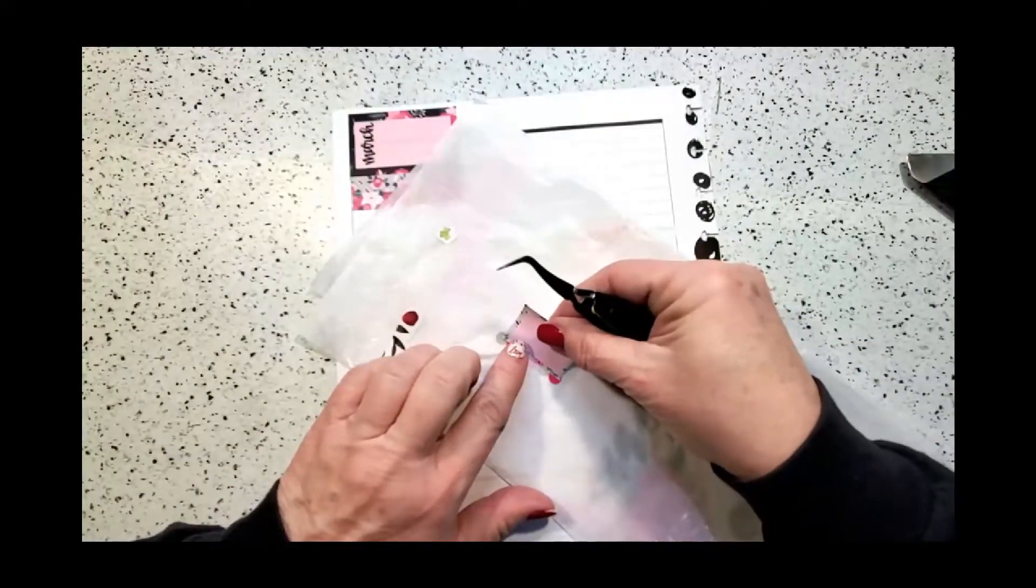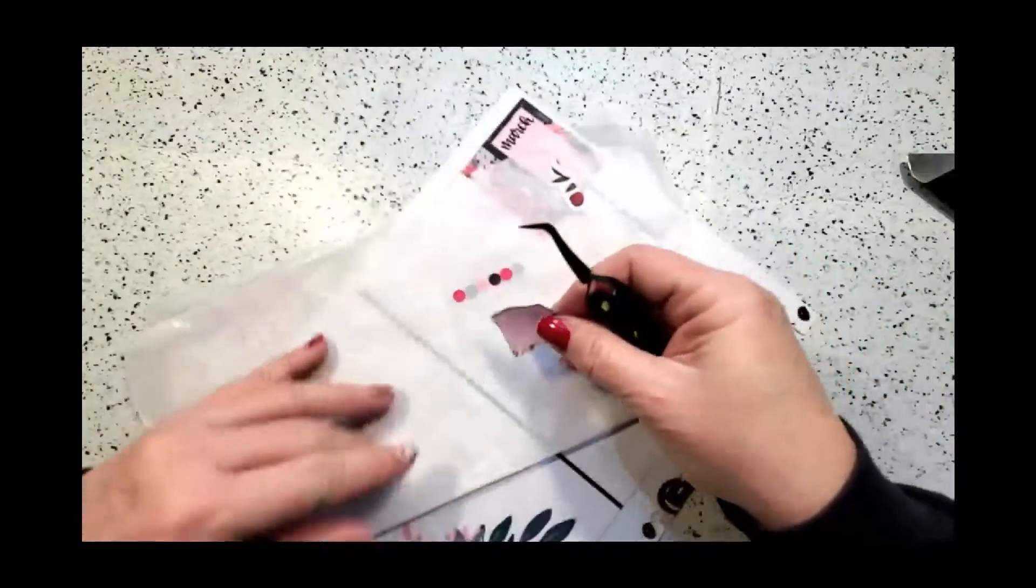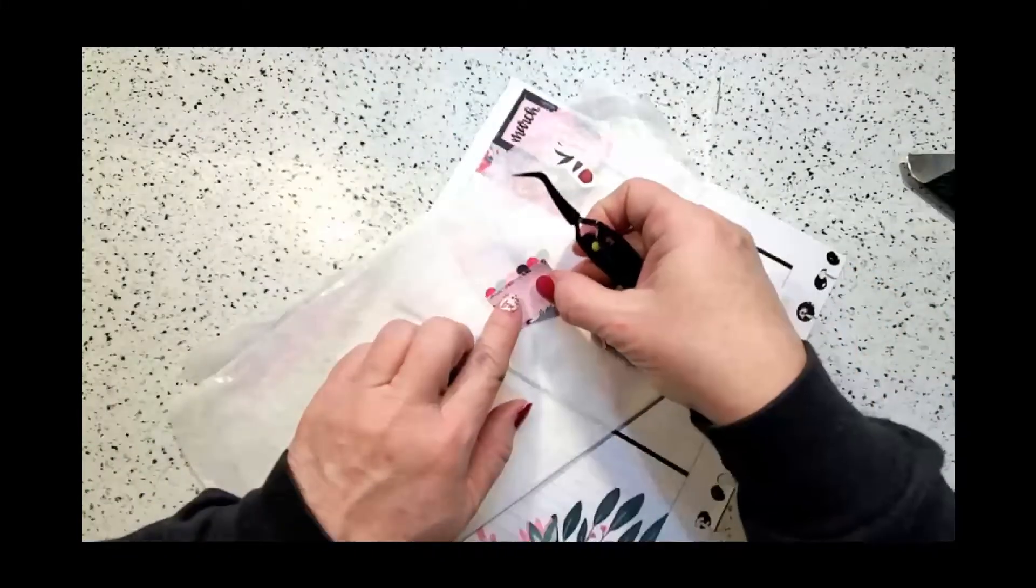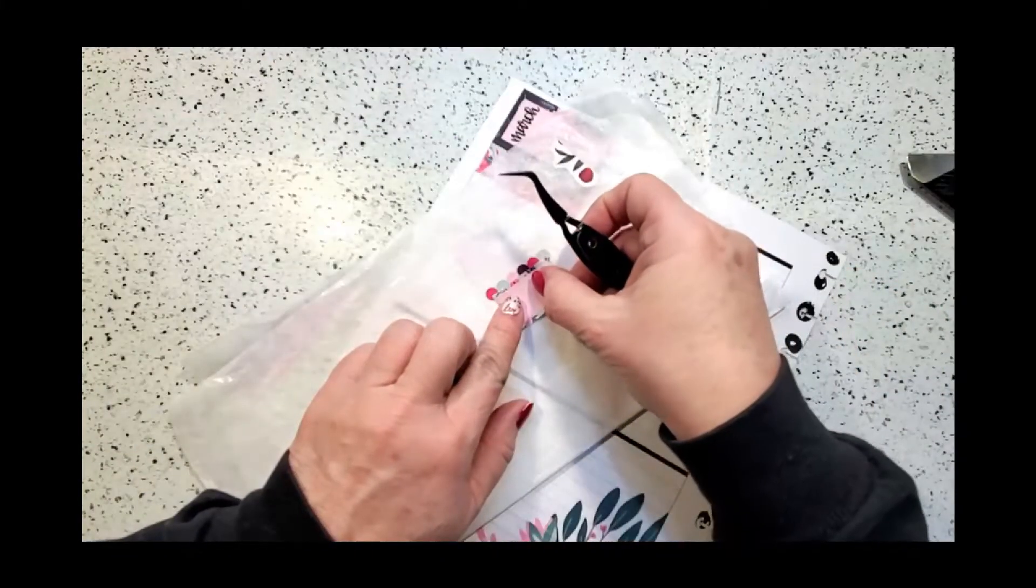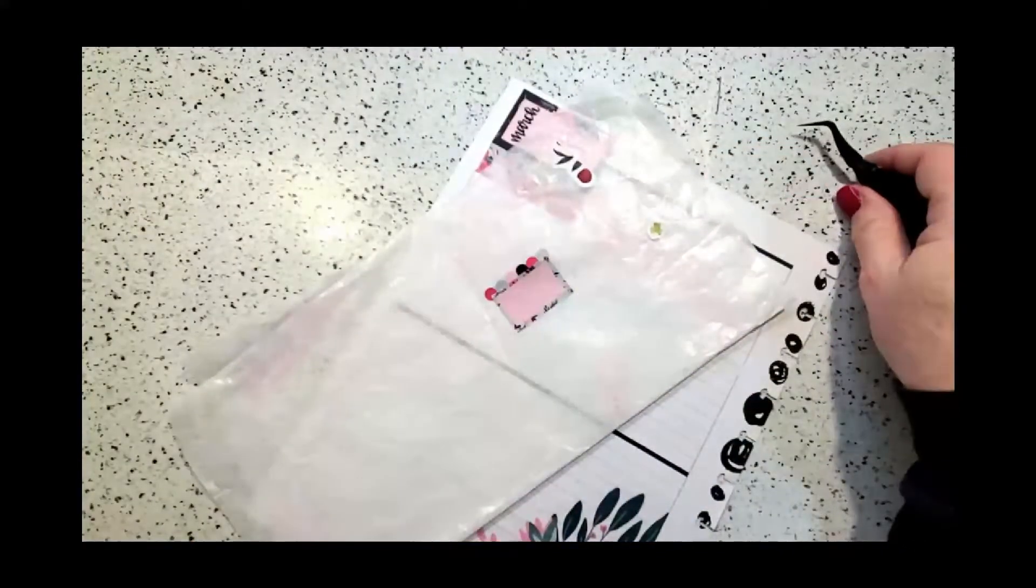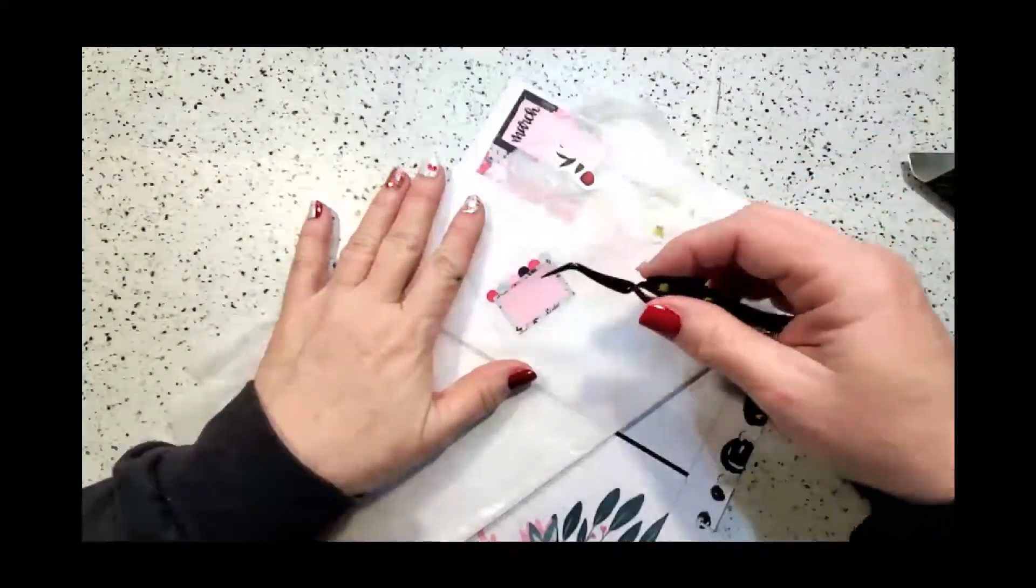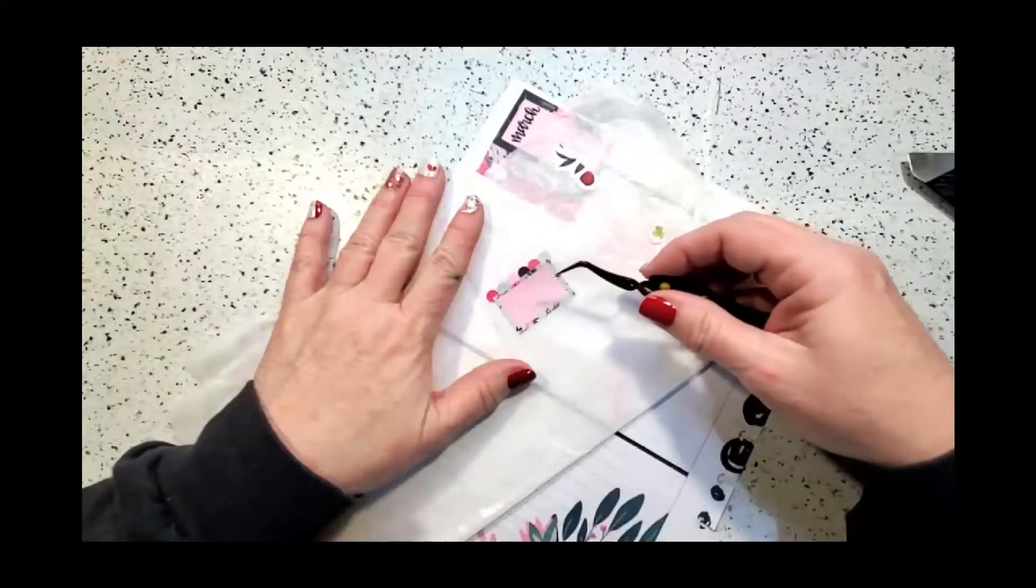And then what I did is I just used this sticker—I want to make sure you guys can see what I'm doing—and I just kind of put it over like half of the circle so it just kind of frames it. If you're a repeat planner friend, you know I don't like my boxes floating on nothing. They have to have an anchor, and these dots make this box the anchor.